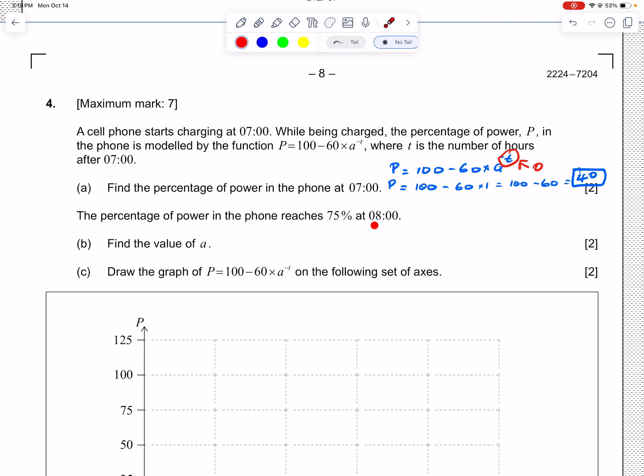So that is the percent of the phone at 7 o'clock. Then it tells you that it charges until 8 o'clock, so one hour has passed, and the phone reaches 75%, which means we can use our function again: 100 - 60 × a^(-t). We can plug in those two values, so P = 75 and time is 1. We get 75 = 100 - 60 × a^(-1).